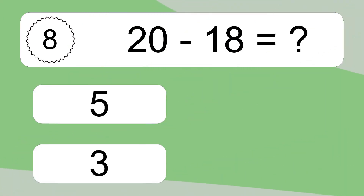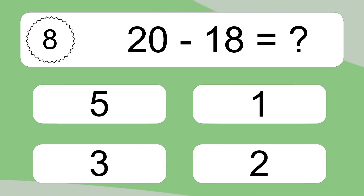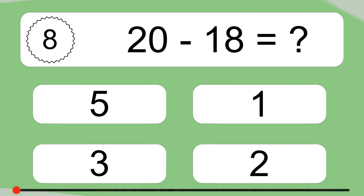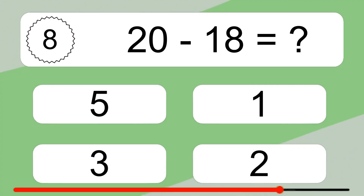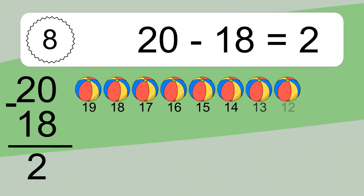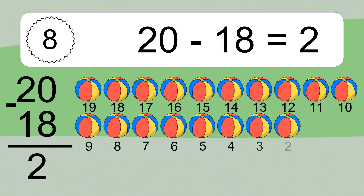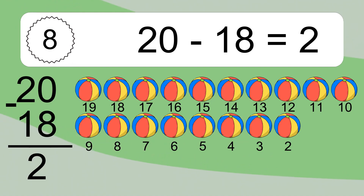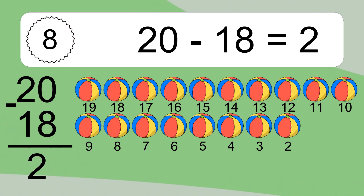20 minus 18 equals what? 20 minus 18 equals 2. Let's count it: 19, 18, 17, 16, 15, 14, 13, 12, 11, 10, 9, 8, 7, 6, 5, 4, 3, 2.